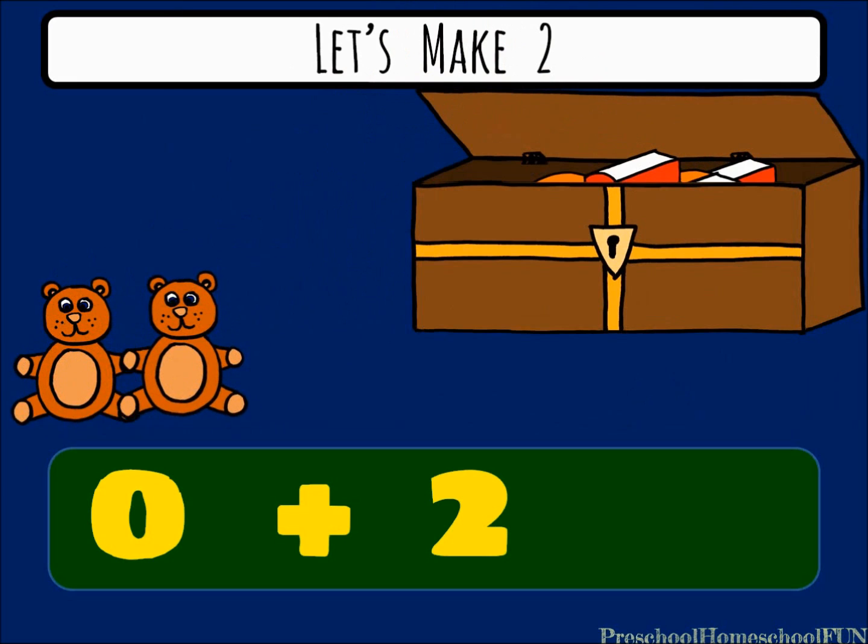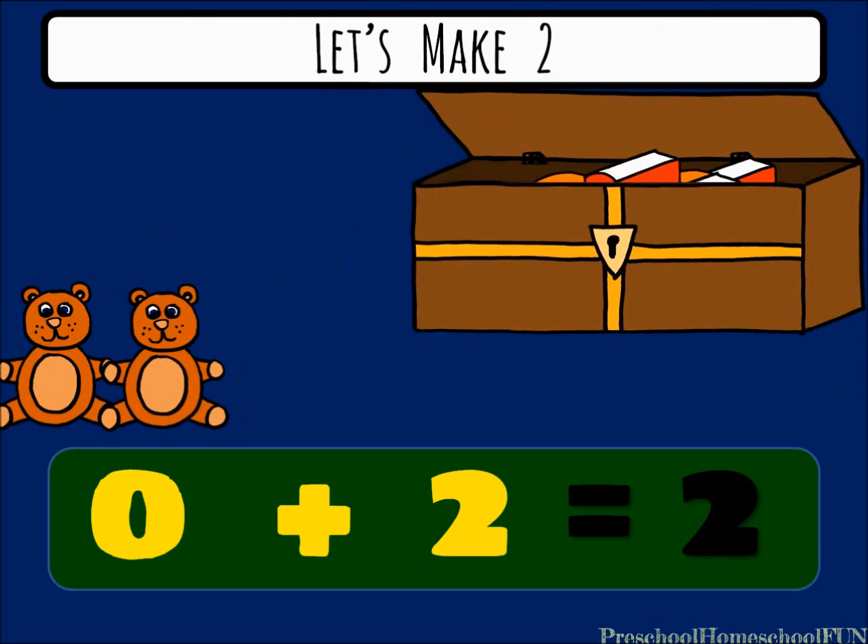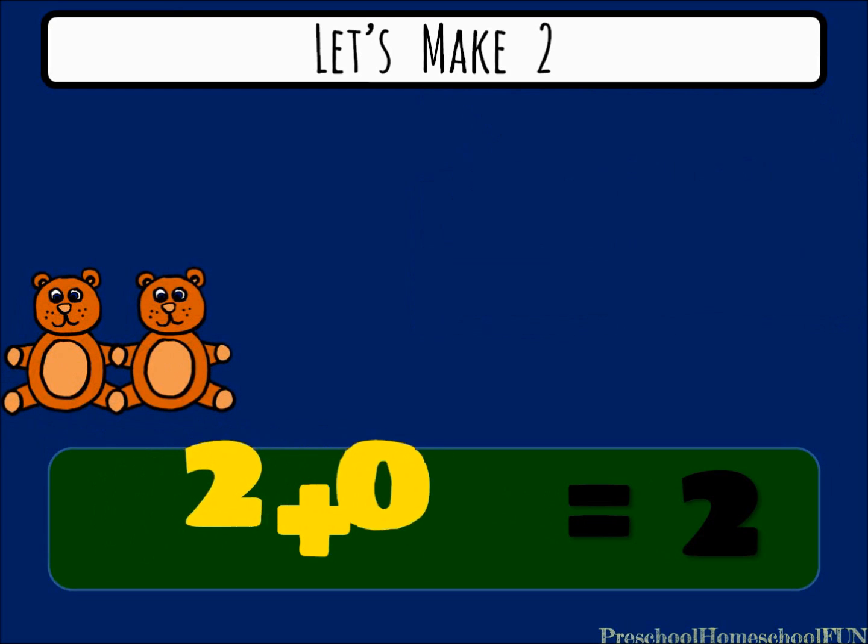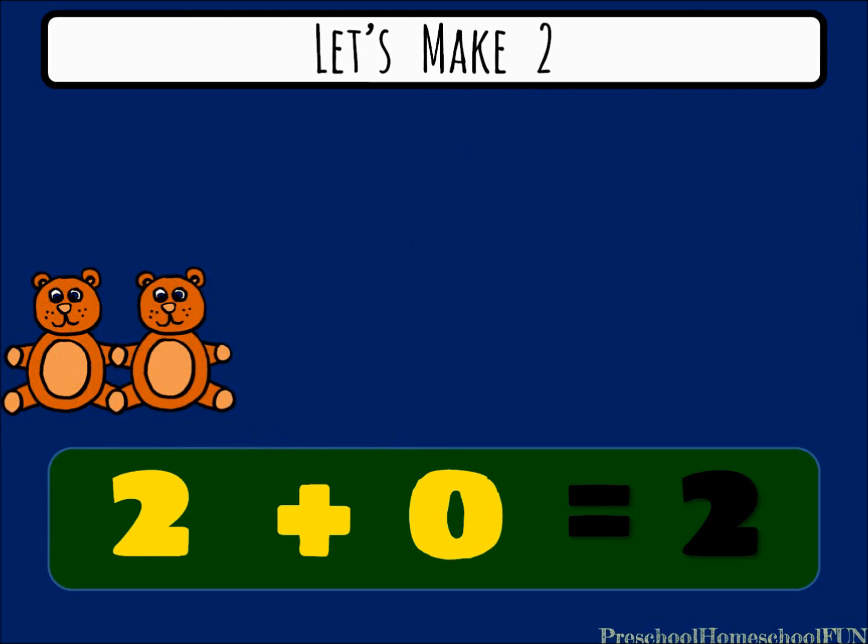Here come 2 teddy bears out of the toy box. We had 0 and added 2. 0 plus 2 equals 2. If we don't add any more teddy bears, look, we have 2 plus 0 equals 2.